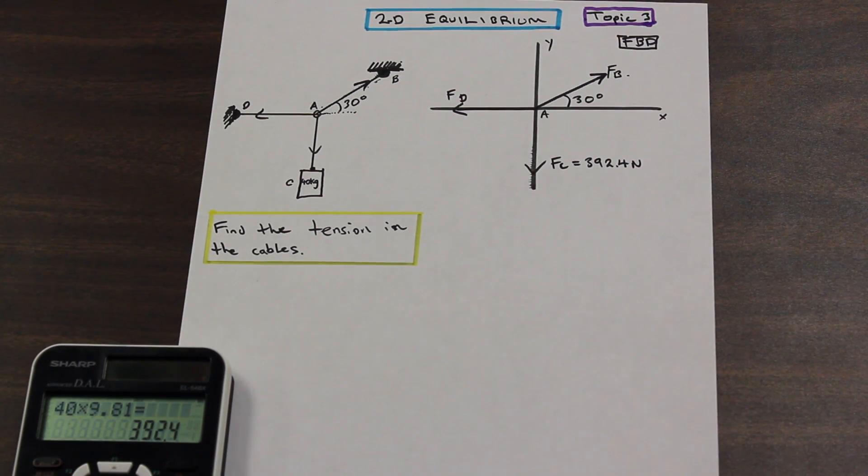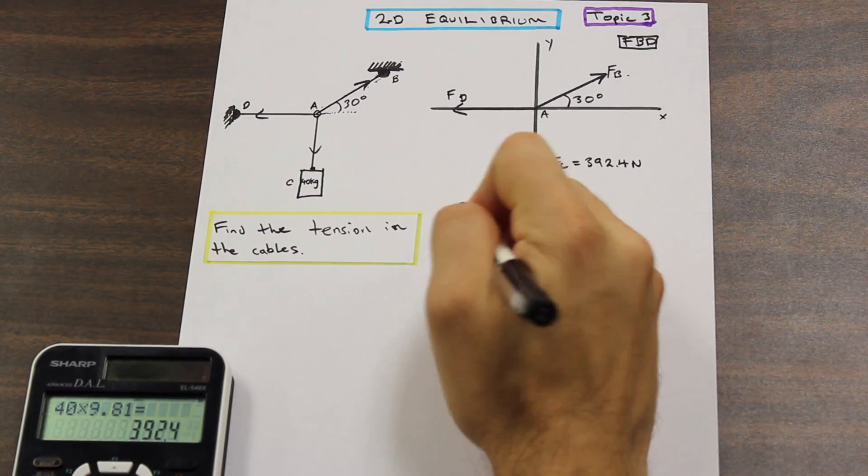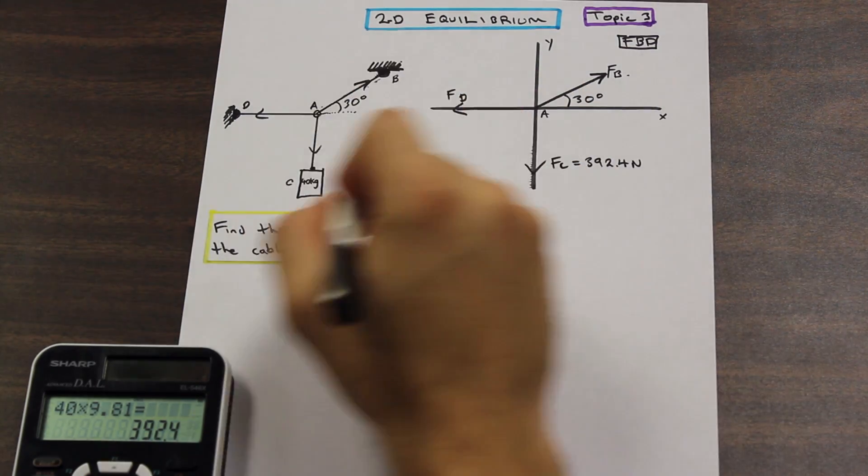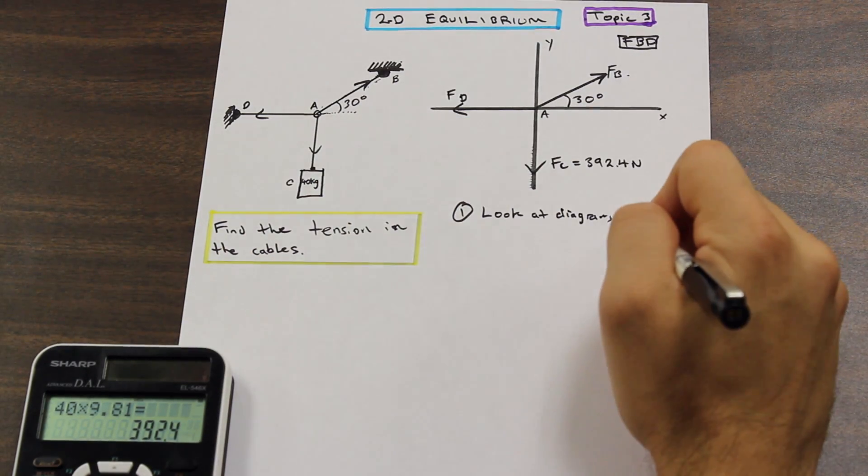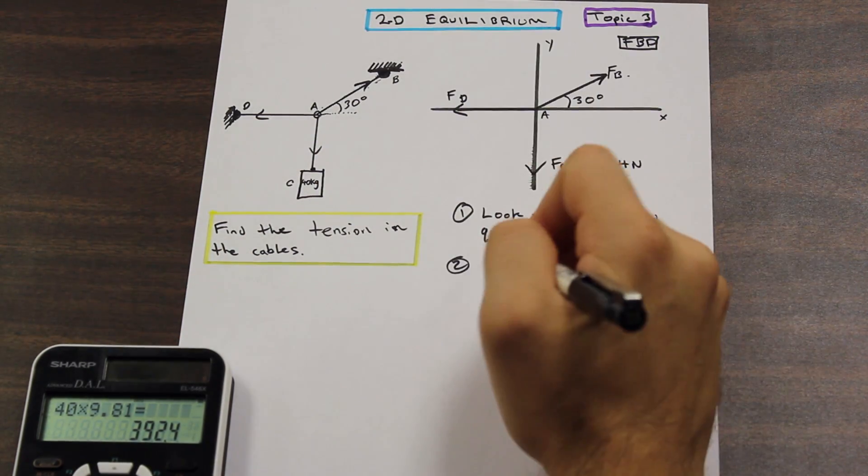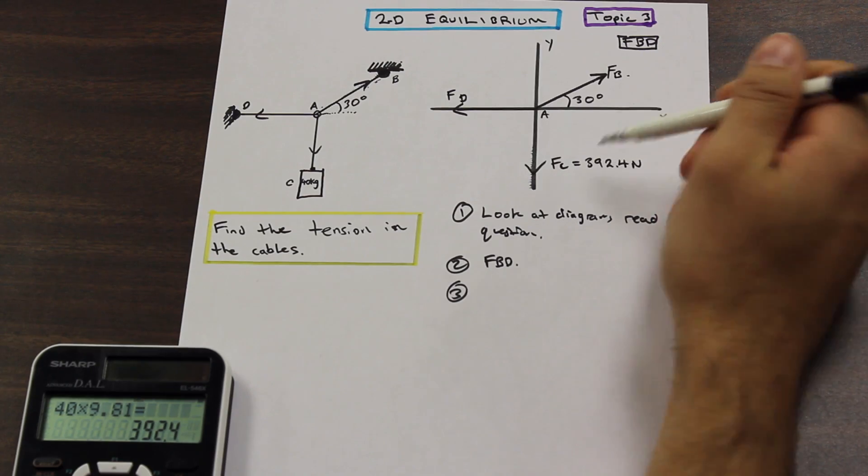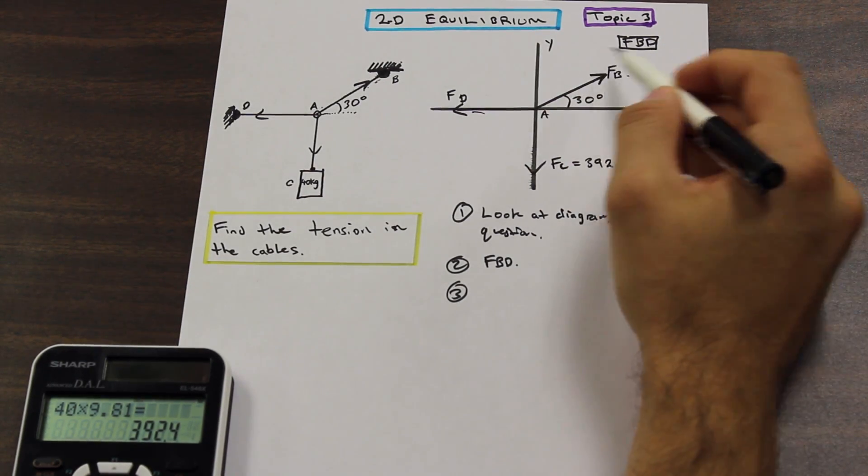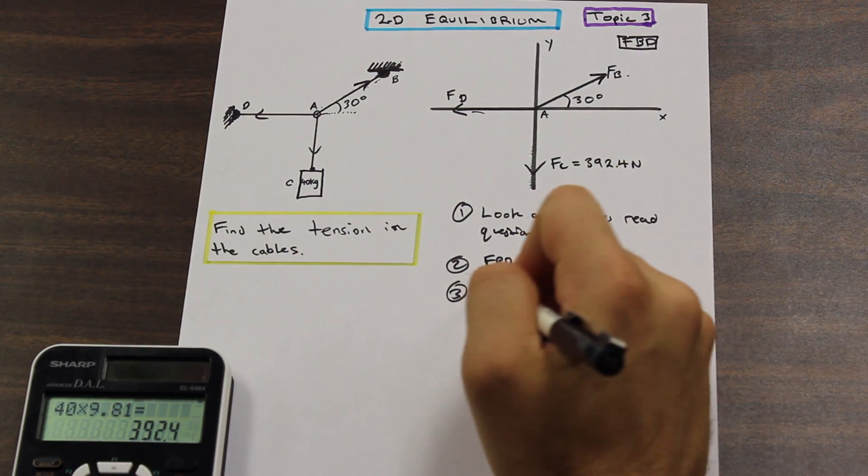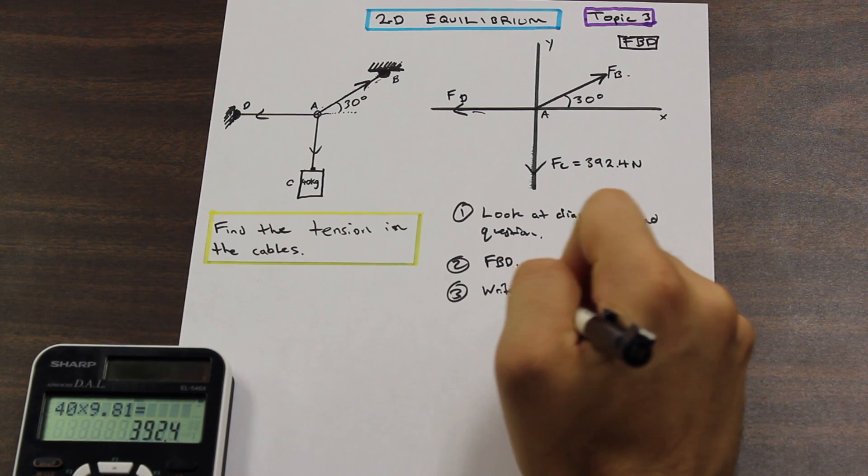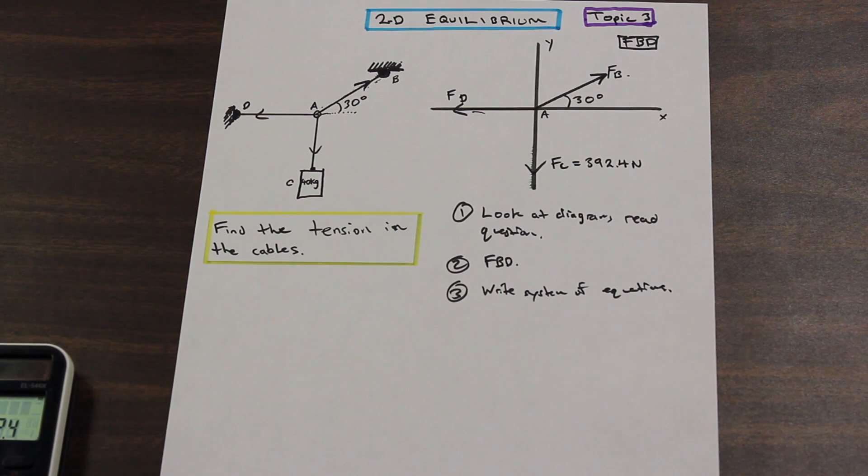So how do we begin here? Well, once we've done this step. I'm just going to write the steps out for you. Step one is to look at the diagram and read what the question asks. Our second step, draw our free body diagram. And our third step, so what we're on now, we're going to write out our equilibrium equations and solve for the individual forces. And whatever the forces are in this free body diagram, those are going to be equal to the tensions in the cables, easy enough. So write system equations. Perfect. So let's go ahead and do that.